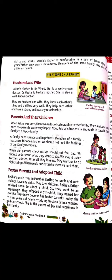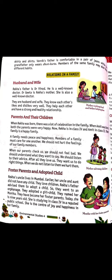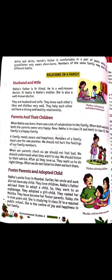Our next topic is foster parents and adopted children. Rekha's uncle lives in Mumbai. Earlier, her uncle and aunt did not have any child. They love children. Rekha's father advised them to adopt a child, so they went to an orphanage and adopted a girl child. They named her Monica. They have become her foster parents today. She is 9 years old, studying in class 4th in a reputed public school. She is the center of joy and happiness in her family.